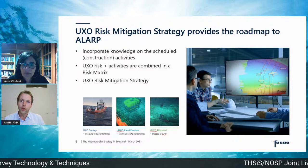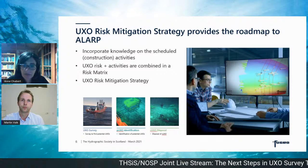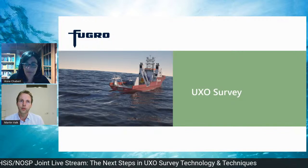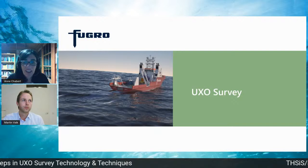All these insights are combined into a UXO risk mitigation strategy using knowledge from the desktop study, the scheduled activities, a UXO risk matrix, and recommended mitigation strategy — often consisting of a survey, identification, and clearance campaign. This whole framework provides a clear roadmap to obtain a LARP.